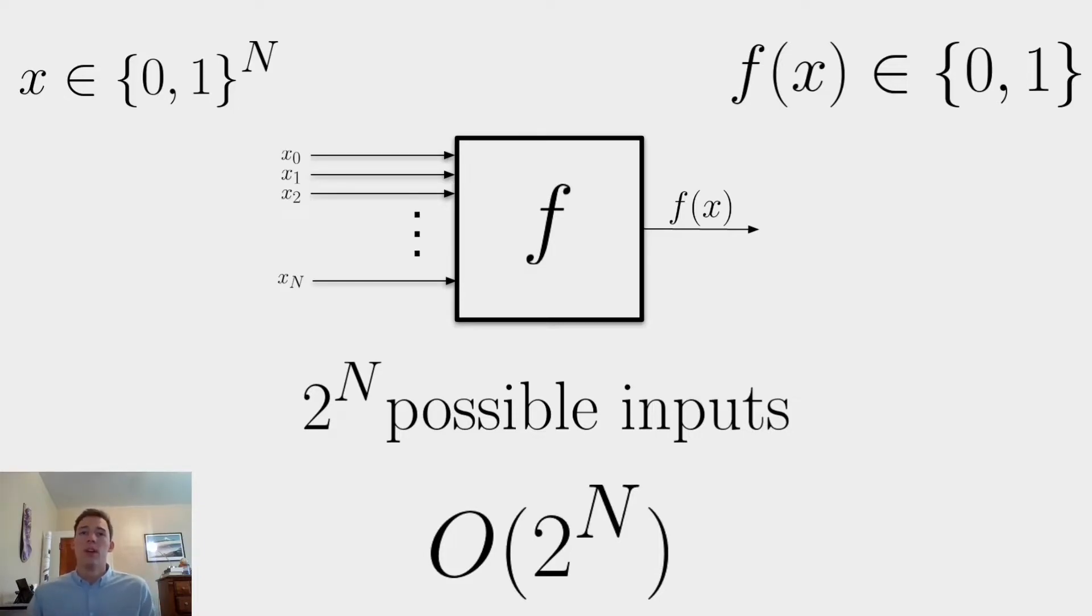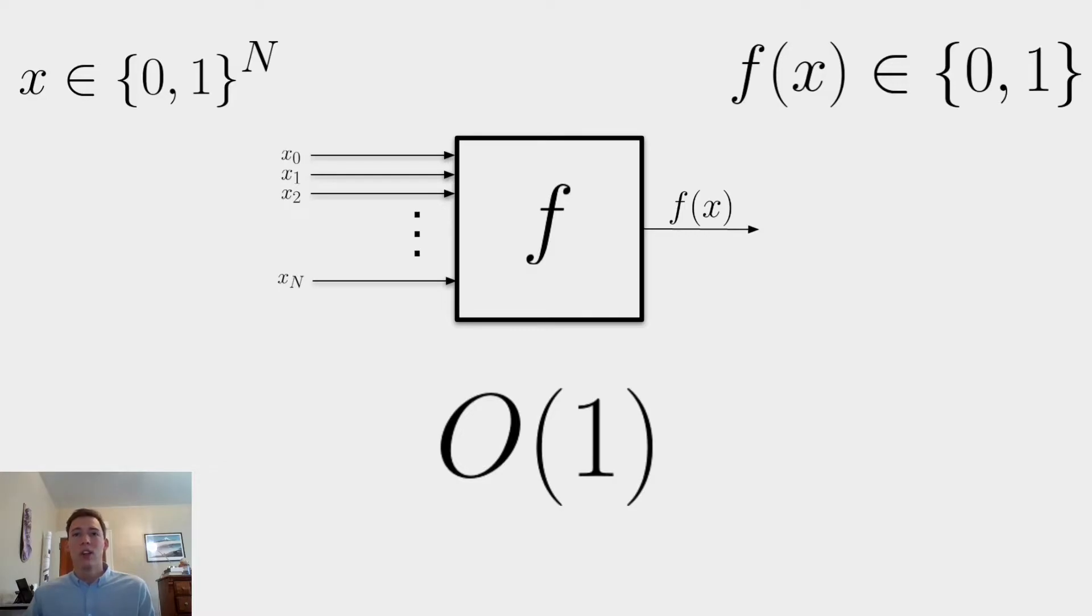On a quantum computer, though, Deutsch's algorithm allows us to do this in linear time. More specifically, O(1) time, meaning regardless of the size of our input string x, we always have to make just one query to f to determine whether it is constant or balanced.